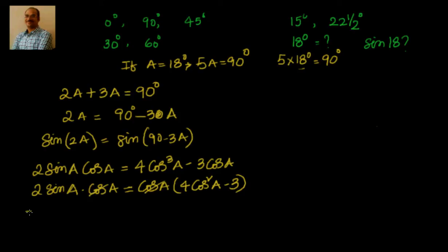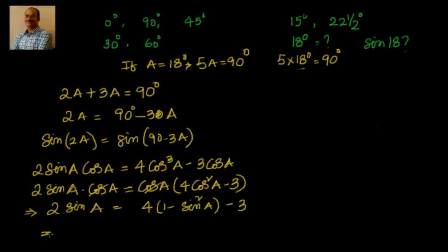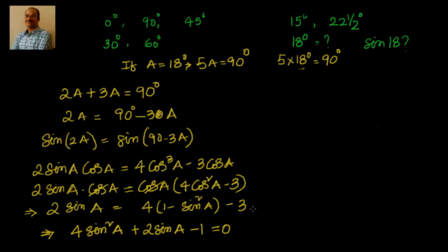Now what I am trying to do — I am trying to form a quadratic equation in sines so that I can find out sin(a) using the quadratic formula. To get a quadratic equation in sine I should not have any cos terms, so I will convert cos²(a) into 1 minus sin²(a). This simplifies to: 4 sin²(a) plus 2 sin(a) minus 1 equals 0.